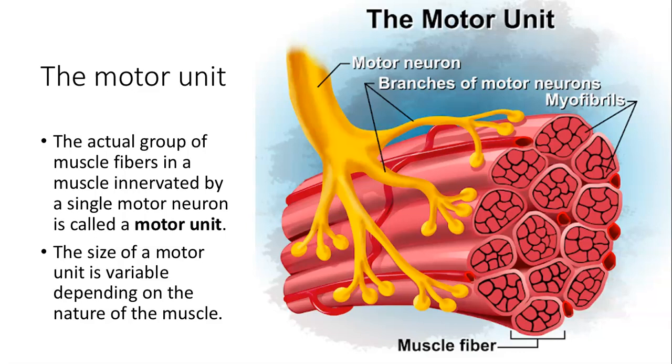When you have small motor units, you're usually going to be involving many fine movements like fingers, thumb of the hand for grasping and texting.